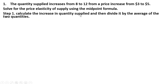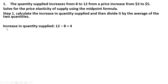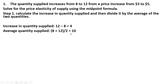Step 1: we're going to calculate the increase in the quantity supplied and then divide it by the average of the two quantities. In this example, the quantity supplied increased by 4 units — just 12 minus 8. And the average quantity supplied, adding both numbers and dividing by 2, gives us 10.